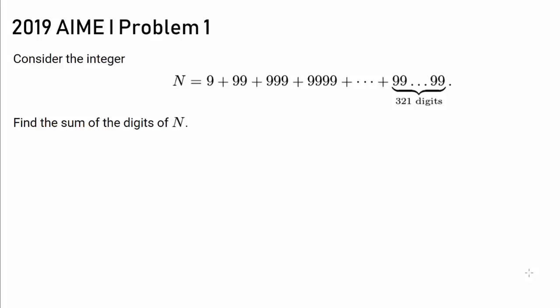Let's try out the first problem, and hence arguably the easiest problem, on this year's AIME I. Consider the integer N equals 9 + 99 + 999 + 9999, all the way to this number with 321 nines. Find the sum of the digits of N.